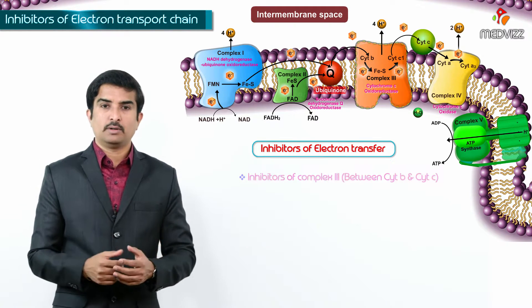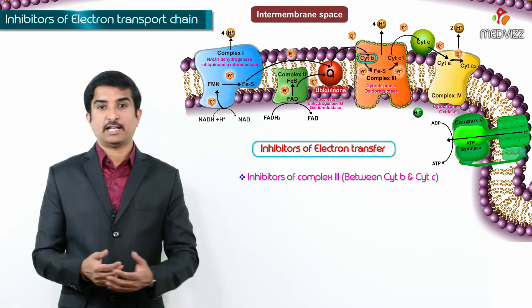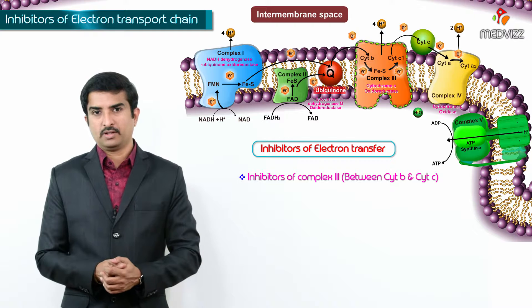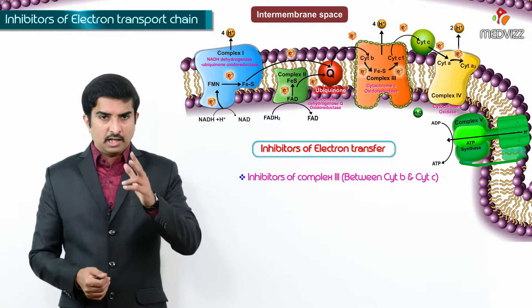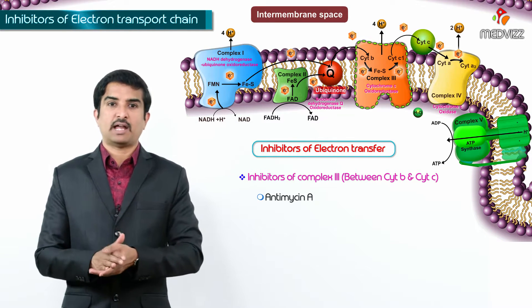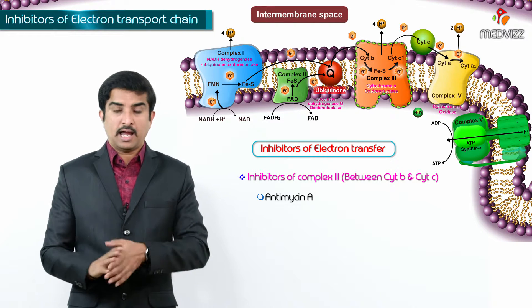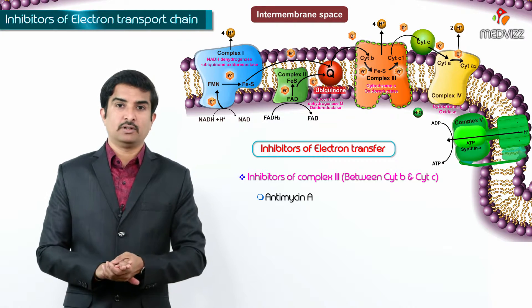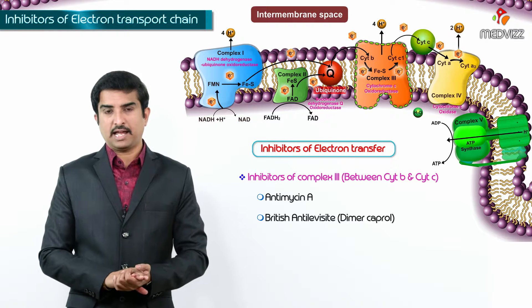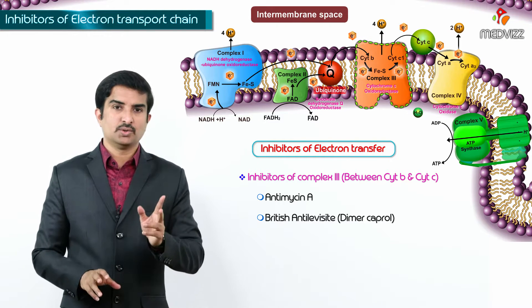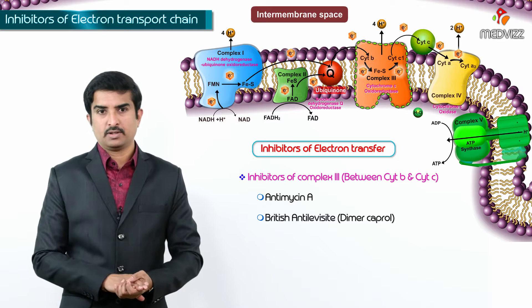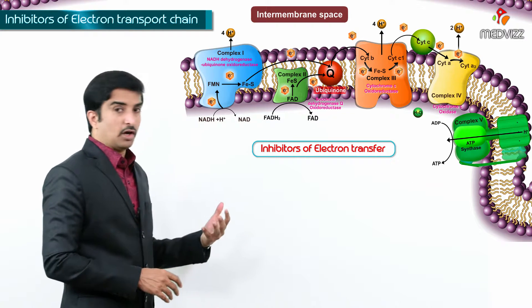Between cytochrome B and cytochrome C, the inhibitors of Complex III are antimycin A and BAL (British Anti-Lewisite), also called dimercaprol. These two agents inhibit Complex III.